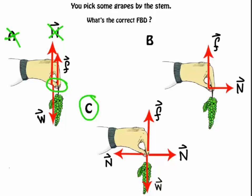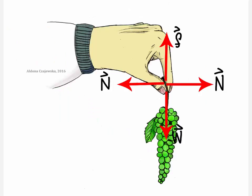Now, let's take a closer look at the correct free body diagram. So here is our correct free body diagram. We have two normal forces, friction, and the weight of the grapes, so four forces in total.